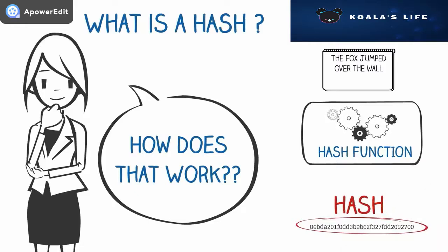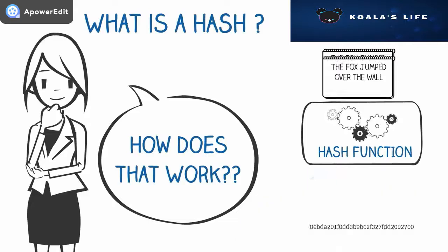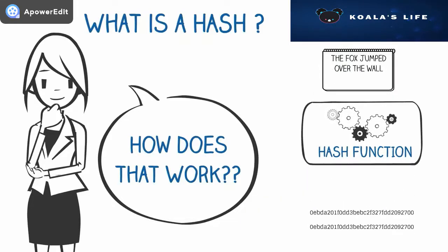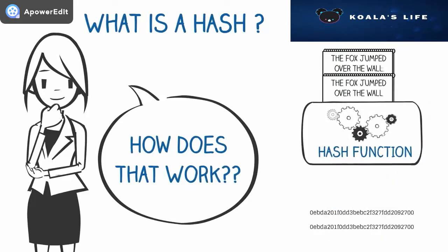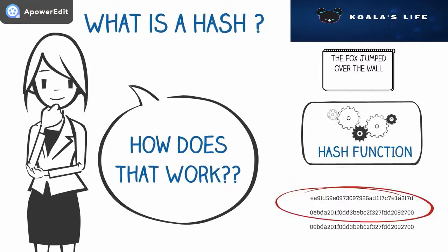This fixed-length output is normally much smaller than the original input. Every time the same digital media is put through the hash function, it produces the exact same digital output or hash. When even just a single bit of data in the digital media is changed and then put through the hash function, the digital output — the hash — is completely different to the original one.